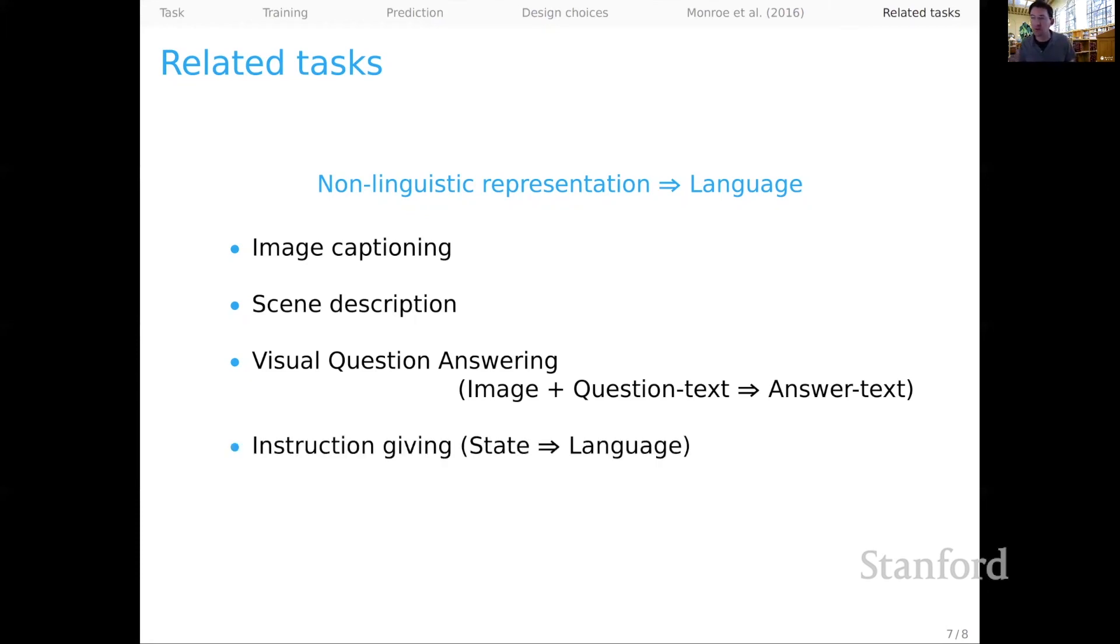And then instruction giving would be a more general form where the input is some kind of state description. And the idea is that we want to offer a complicated instruction on that basis. And I think we can think of many others that would fit into this mold and benefit not only from the encoder-decoder architecture, but also from conceptualization explicitly as grounded natural language generation tasks.